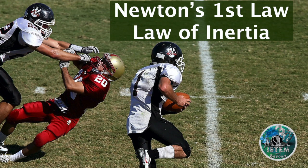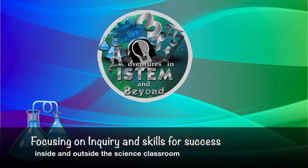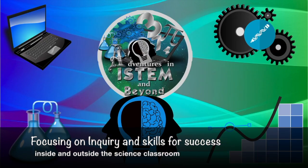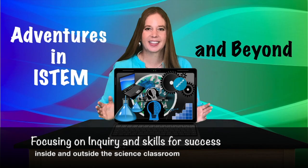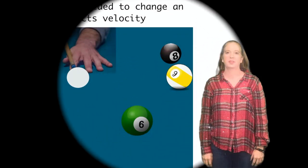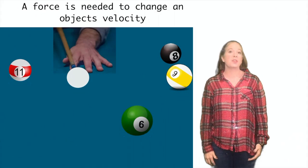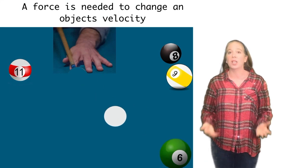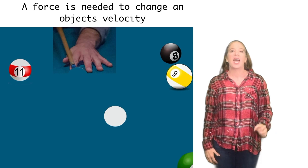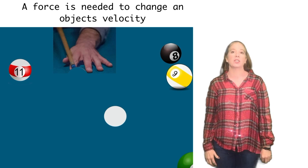Newton's First Law, the Law of Inertia. In this video, the six ball has a velocity of zero. As the cue ball hits it, an unbalanced force occurs and changes the six ball's velocity, causing it to move.